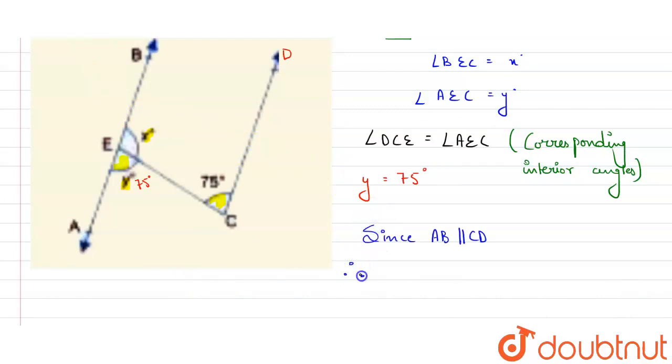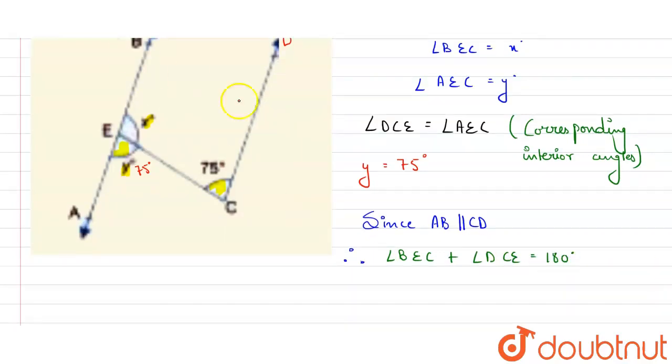So let's use the reason here. Since AB is parallel to CD, therefore sum of interior angles will be 180 degrees. Angle BEC plus angle DCE will be equal to 180 degrees. Reason is sum of interior angles.